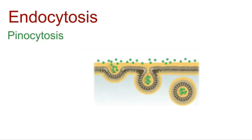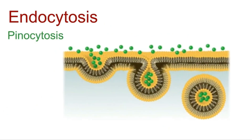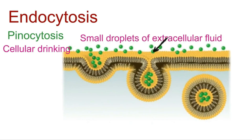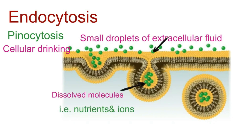Next is pinocytosis. This is like cellular drinking. Cells engulf small droplets of extracellular fluid containing dissolved molecules, such as nutrients and ions.